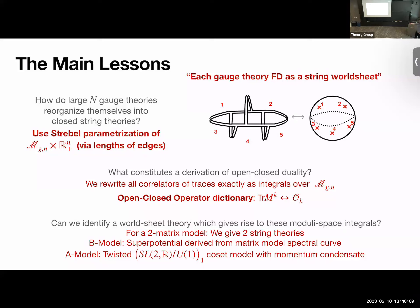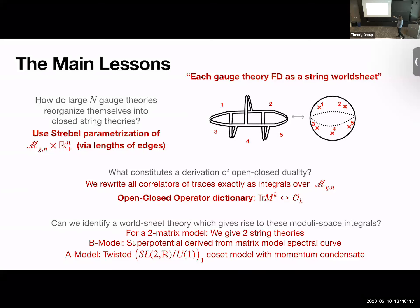We'll need to give a certain vacuum expectation value to some operators — that's what I mean by the momentum condensate. The main point is: instead of a lattice, we use the Strebel parametrization; we translate traces into integrals over moduli space; and then we think about these integrals coming from worldsheet theories — nothing too exotic.